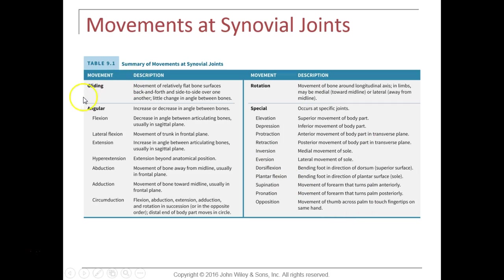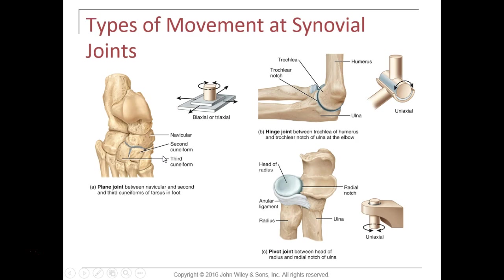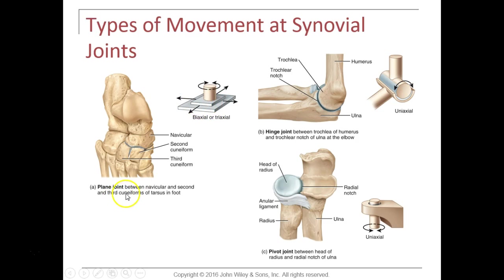Here are all the terms with their descriptions — please learn these definitions, as the test will have definition questions for these types of movements. To finish the chapter, pictures show the different types of joints and what movements they allow. A gliding-type movement is shown with the tarsal bones in your foot — the navicular and cuneiforms — allowing gliding movement back and forth. A gliding movement joint, as in your foot or wrist, is called a plane joint because it allows movement in that plane.